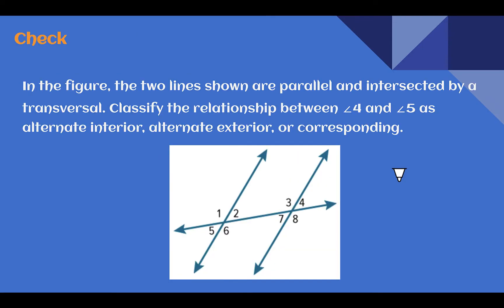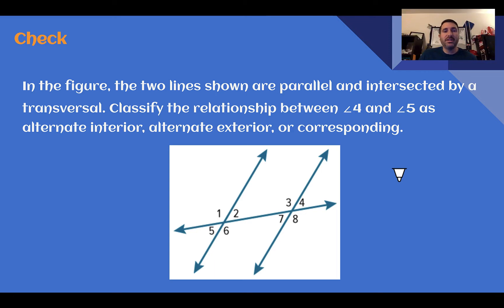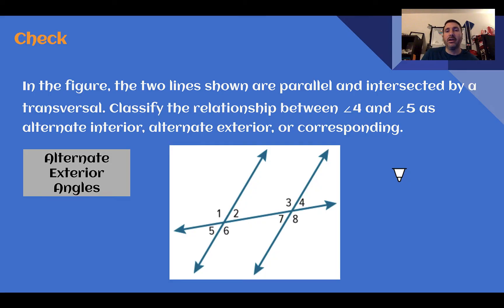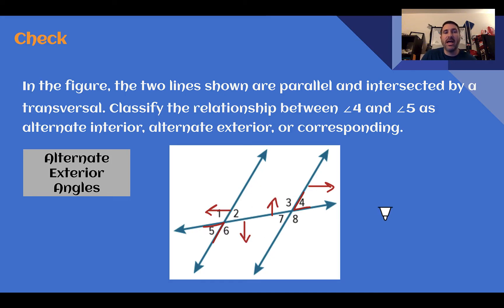Check your understanding — what would angle four and angle five be considered? The answer: these are alternate exterior angles. Angle four and angle five are outside the parallel lines and on opposite sides of the transversal, so these are alternate exterior angles. Outside for exterior, opposite for alternate.